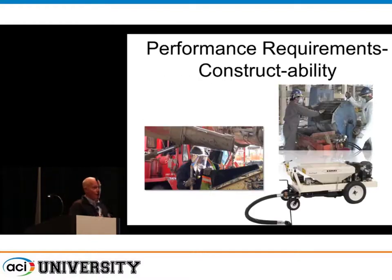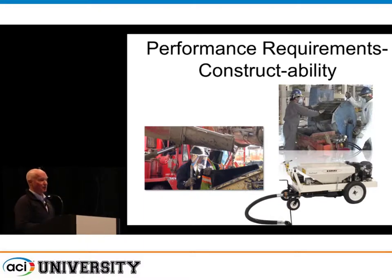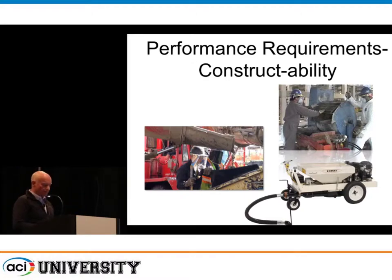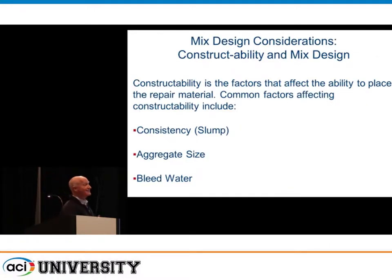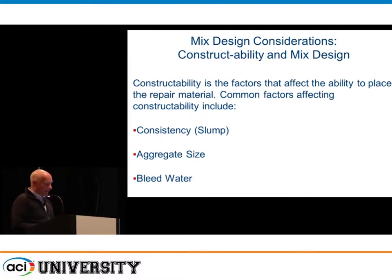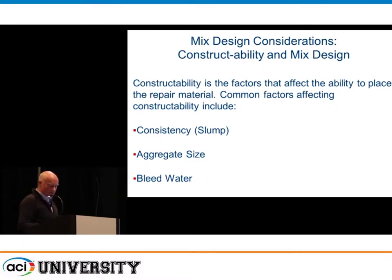The next issue is constructability — we've got to be able to place this material. If I have a low water content, it looks like dry-packed material, and I've got to be able to mix and place it. We have different ways to measure constructability — the consistency properties: slump, aggregate size, and bleed water.